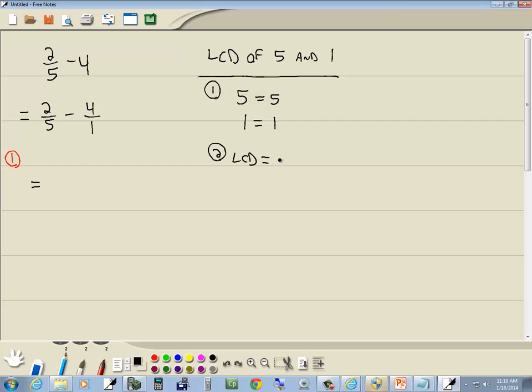Now for the LCD, we look at each prime. We go to 5 - we're looking for the greatest number of times 5 appears in any single line. There's one here, none here, so it's one 5. So the LCD will be 5. What you'll find is if you have two denominators and one of them is 1, the other one is actually your LCD.